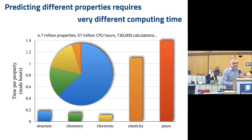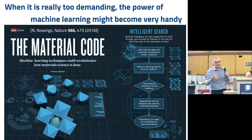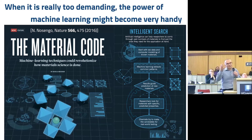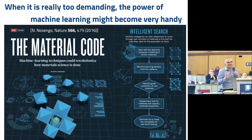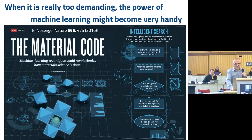This is where machine learning can really become important, because it can help for those properties that have not been computed in a large amount — to train a machine learning model, get an idea of the range that the property can get for some materials, and then maybe do an actual calculation that is long, but you can afford it when it's for a limited number of materials.